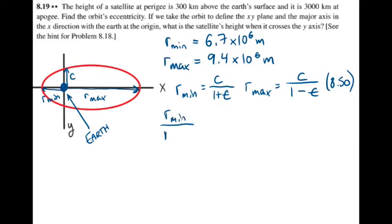rmin over rmax equals c over 1 plus epsilon times the inverse of rmax, 1 minus epsilon over c. The c's cancel.